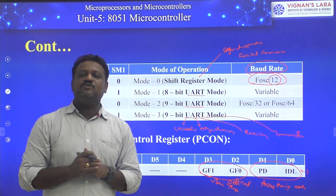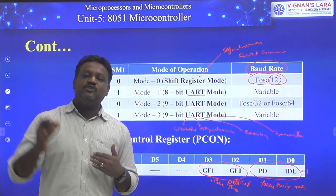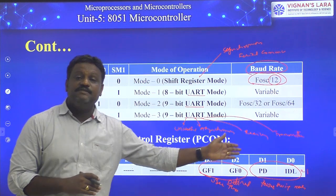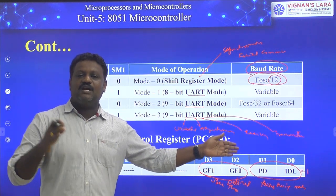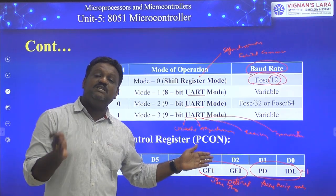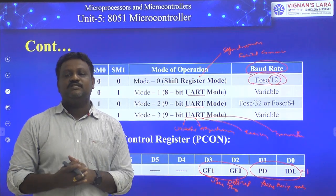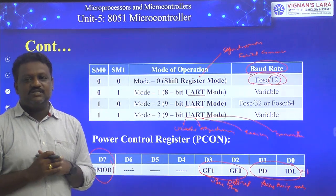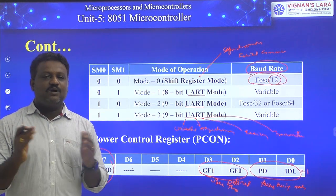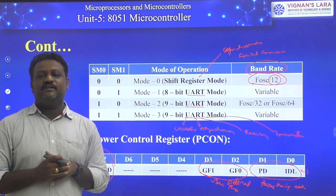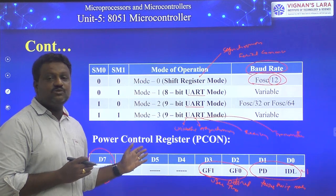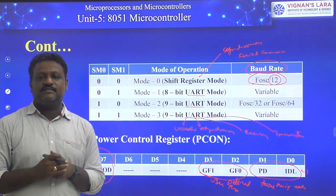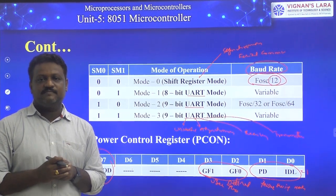We have two power saving modes. To operate the 8051 in either mode, we use the Power Control Register. The least significant bit is the idle bit — setting it to 1 puts the controller in idle mode. The next bit is PD (power down bit) — setting it to 1 puts the controller in power down mode. I hope you understand the concept of serial communication, the signals involved, and the registers used. Thank you for patient listening. We will meet in the next class.